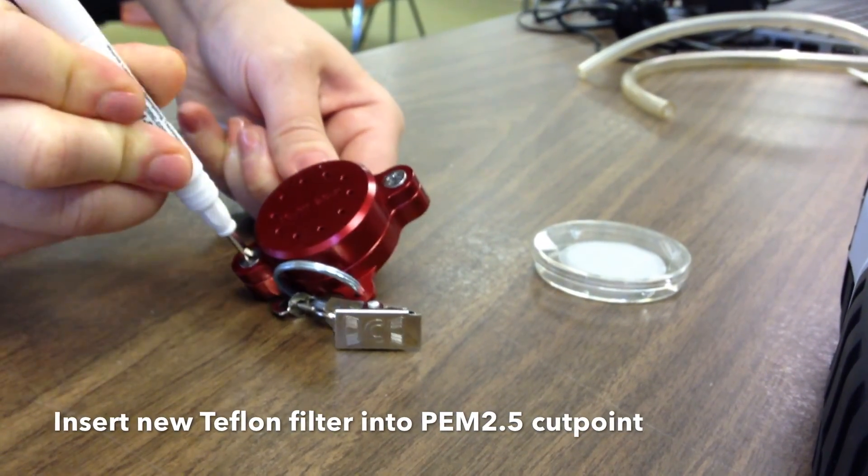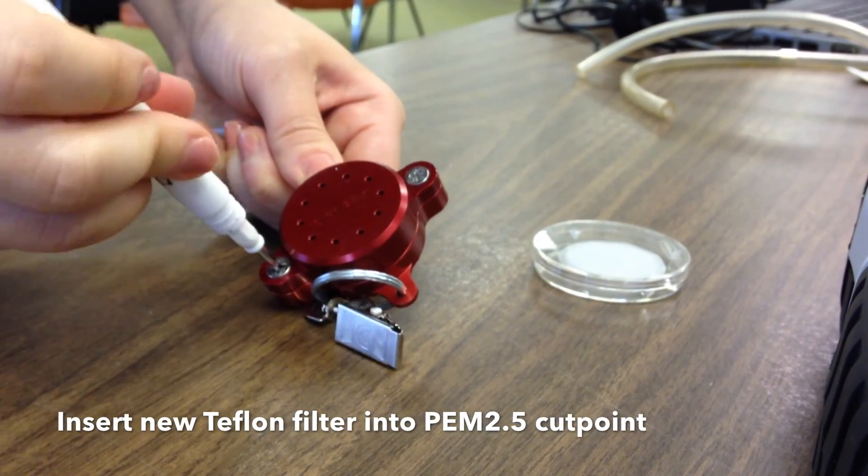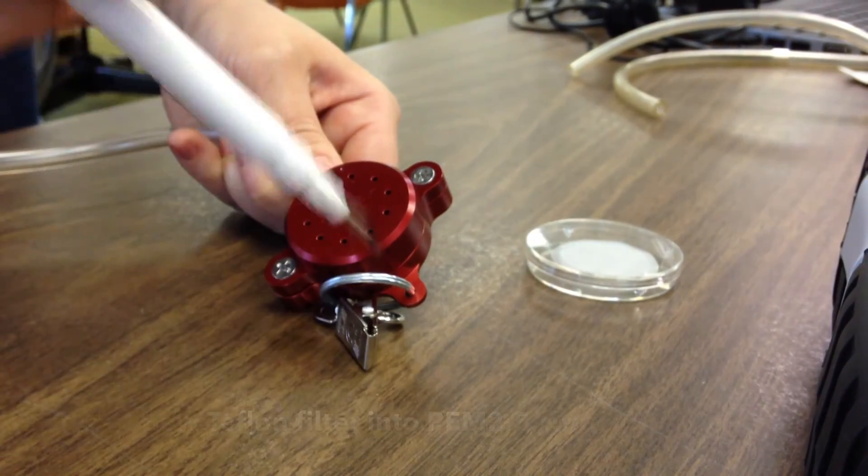Before sampling, a new pre-weighed Teflon filter must be placed into the PEM 2.5 cut point.